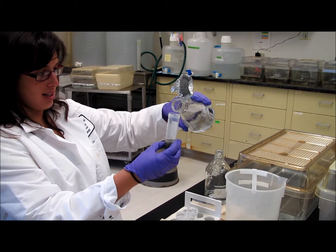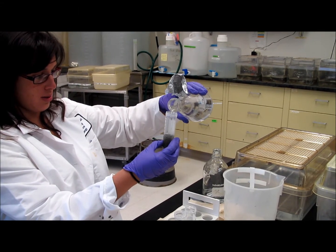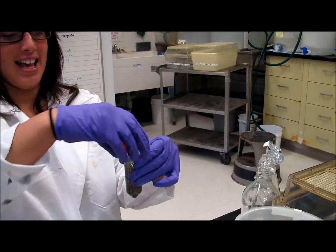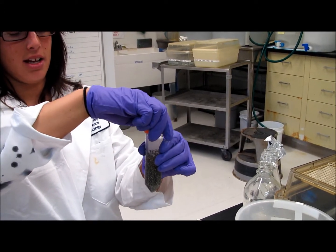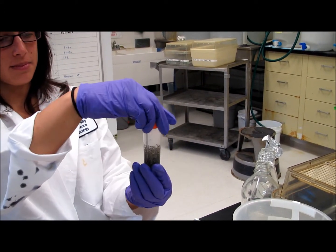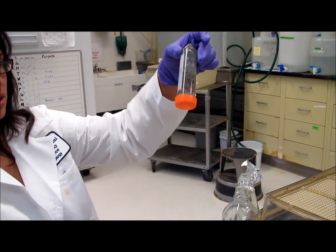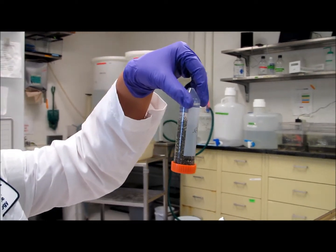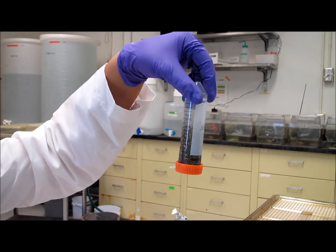Add 2% cysteine solution to the conical tube, pouring it to the top, and then gently invert the tube until the jelly coat is removed from the eggs.